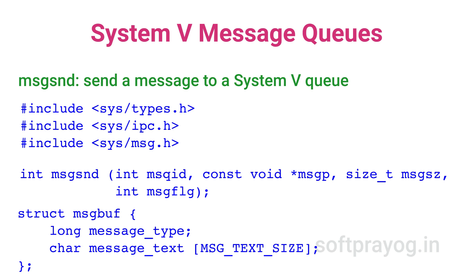msgsnd is the call for sending messages to a queue. msqid is the message queue ID. msgp is the pointer to the message. The message is a structure having two members: a long integer message type which must be greater than zero, followed by message text which can be a structure or an array. The third argument to msgsnd is the message size — not the size of the entire msg buffer but the size of the message text. A message of size zero has only a message type and no message text. The last parameter msg_flag is mostly zero. If the queue is full, msgsnd blocks until there is space; if you specify IPC_NOWAIT, the call returns immediately with return value -1 and errno set to EAGAIN.